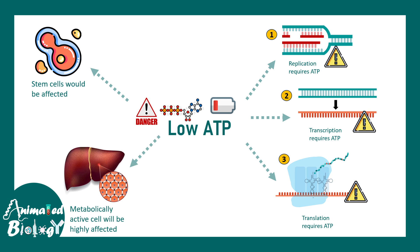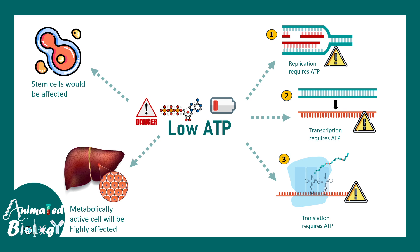Cells that are highly metabolically active, like hepatocytes, would face enormous challenges because they must run many biochemical pathways under normal conditions to function properly — so their function would be greatly compromised. From a molecular and physiological level, there would be a huge compromisation of normal function. That is why ATP is so important and ATP depletion is such a detrimental cellular stress.